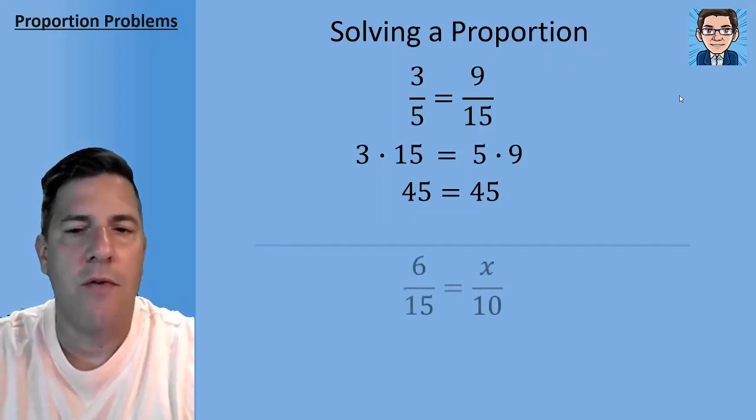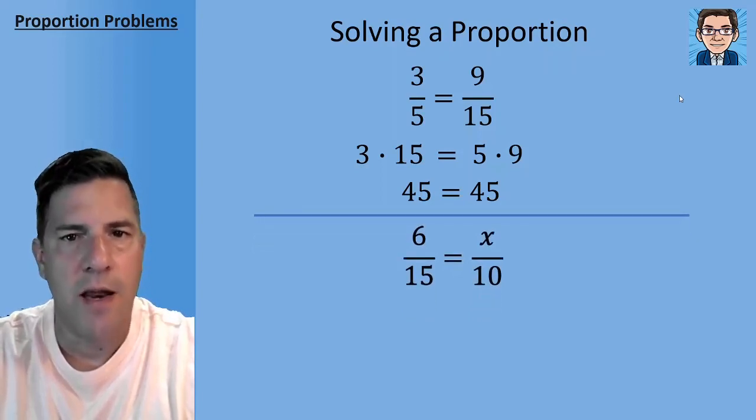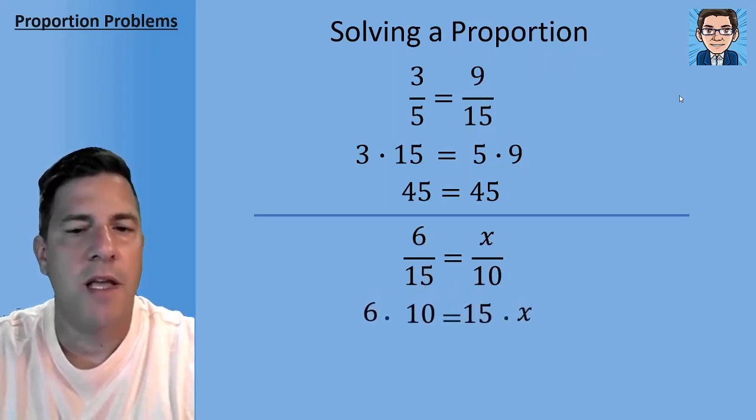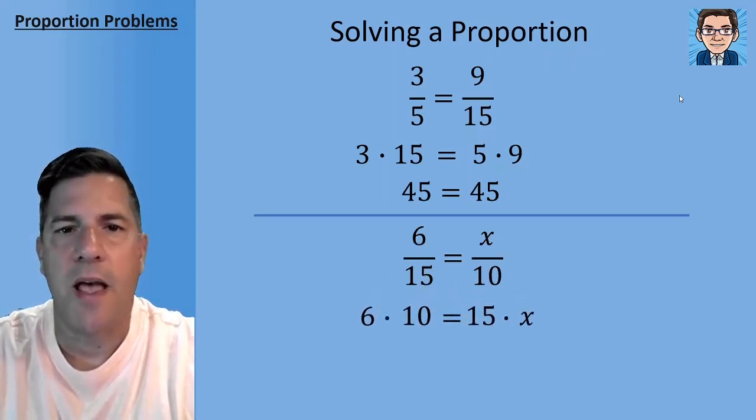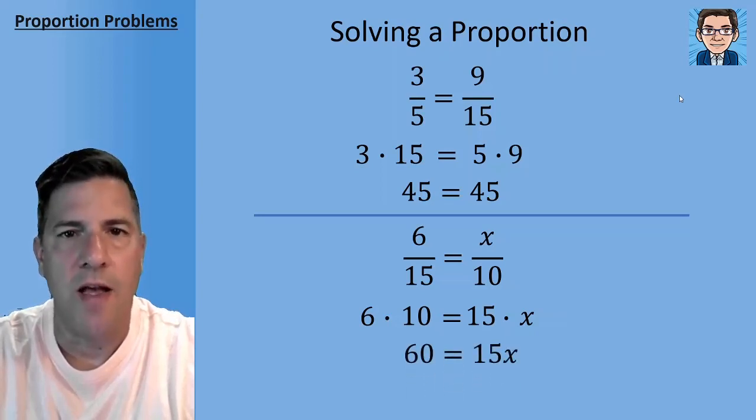So we can use that to solve for an unknown. So if we've got 6/15 equals x/10, we can cross multiply the 6 times the 10 and the 15 times the x and set them equal to each other. So 60 is going to equal 15x. Divide both sides by 15 to solve for x and we get x equals 4.